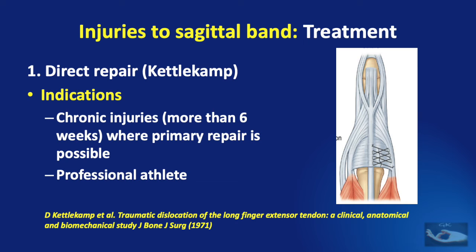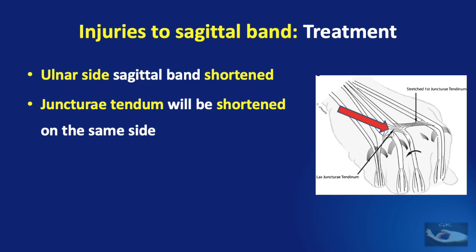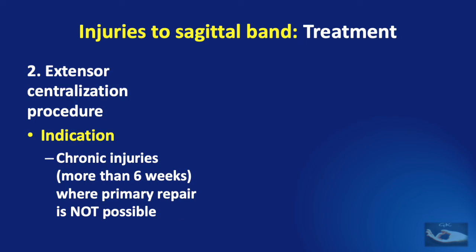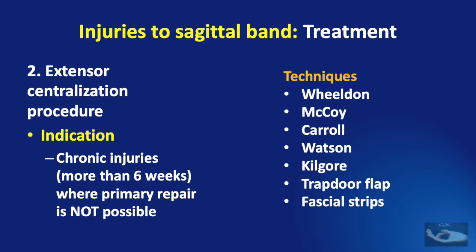This sort of repair is not usually possible in chronic injuries because many changes occur after rupture of the sagittal band. After injury to the radial side sagittal band, the ulnar side sagittal band gets shortened, the juncturae tendinum are shortened on the same side, and the ruptured radial sagittal band edges become enmeshed in scar tissue — making it impossible to suture the ends together. For these patients, the contracture of the ulnar side sagittal band and juncturae tendinum must be released, and the defect in the radial sagittal band must be reconstructed. This procedure is called the extensor centralization procedure and is indicated in all chronic injuries where primary repair is not possible, and also in the professional athlete.